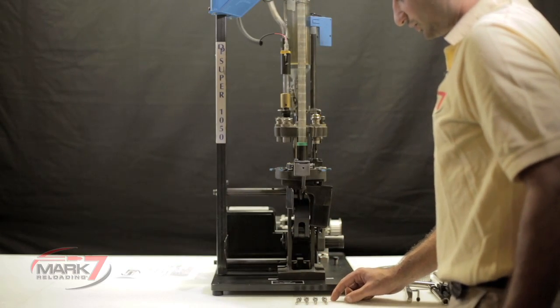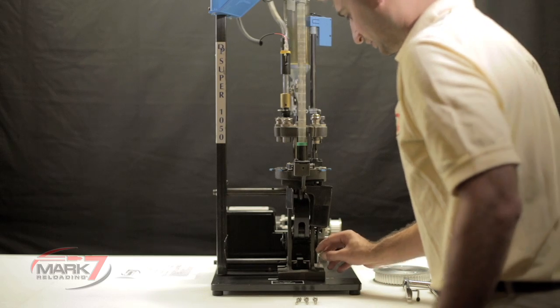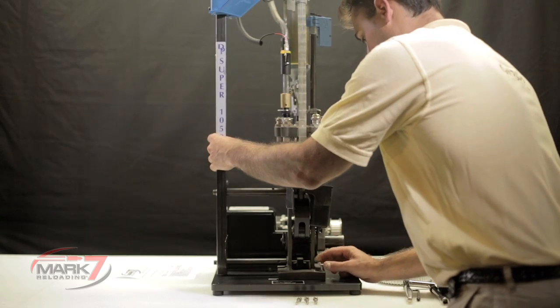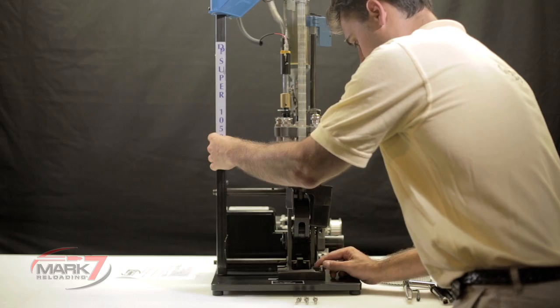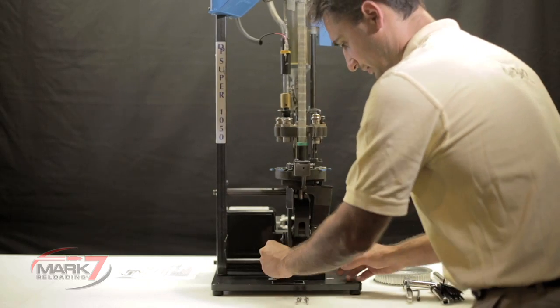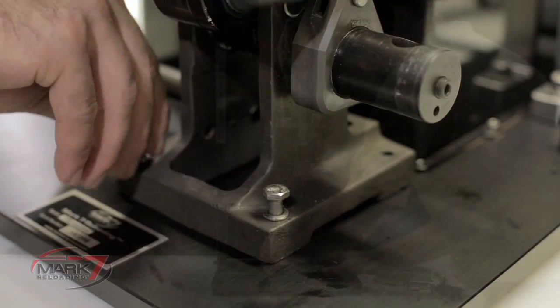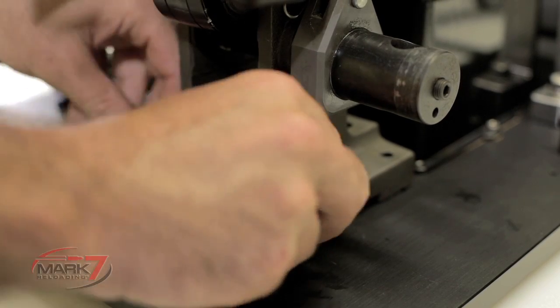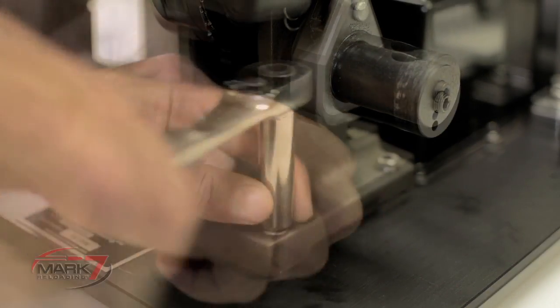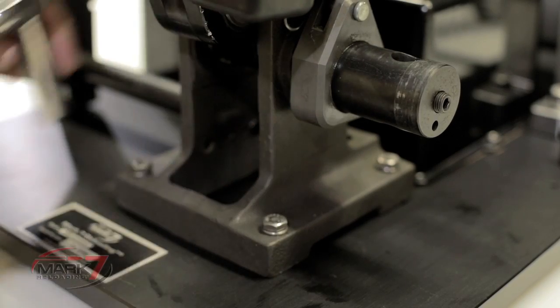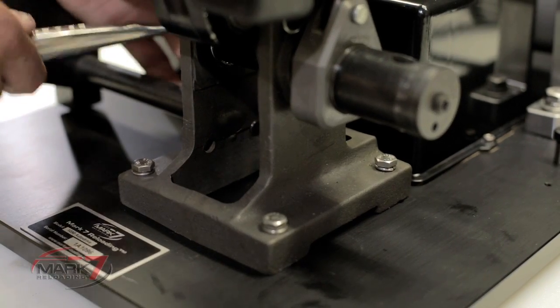Using the four quarter 20 hex heads, insert those into the Dillon base into the base plate. Make sure to thread in all four before you fully thread any of the bolts into the base plate.